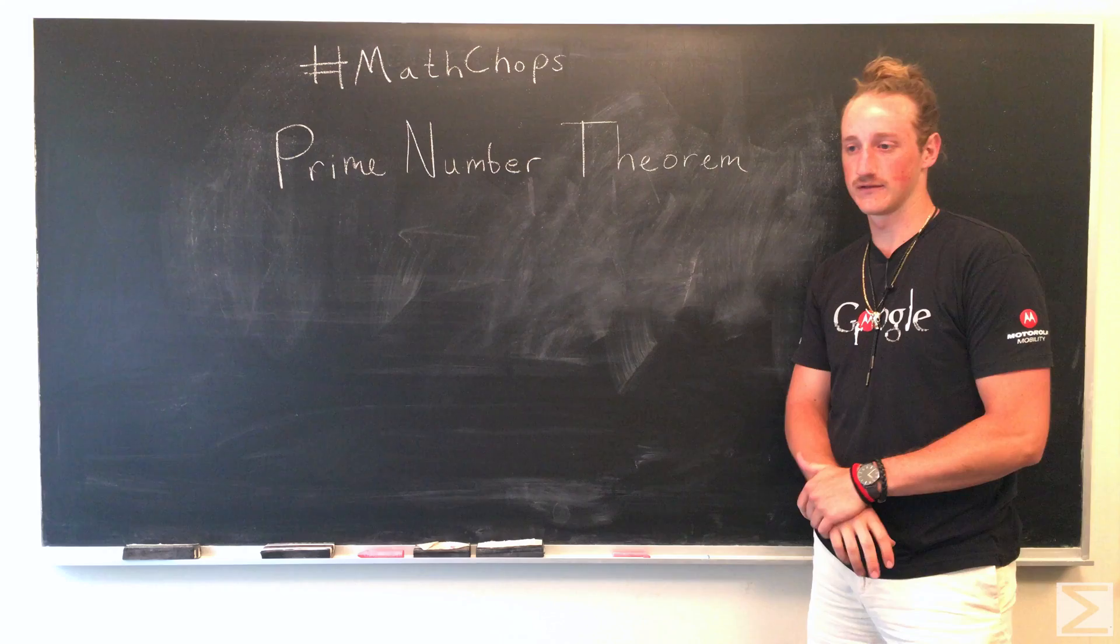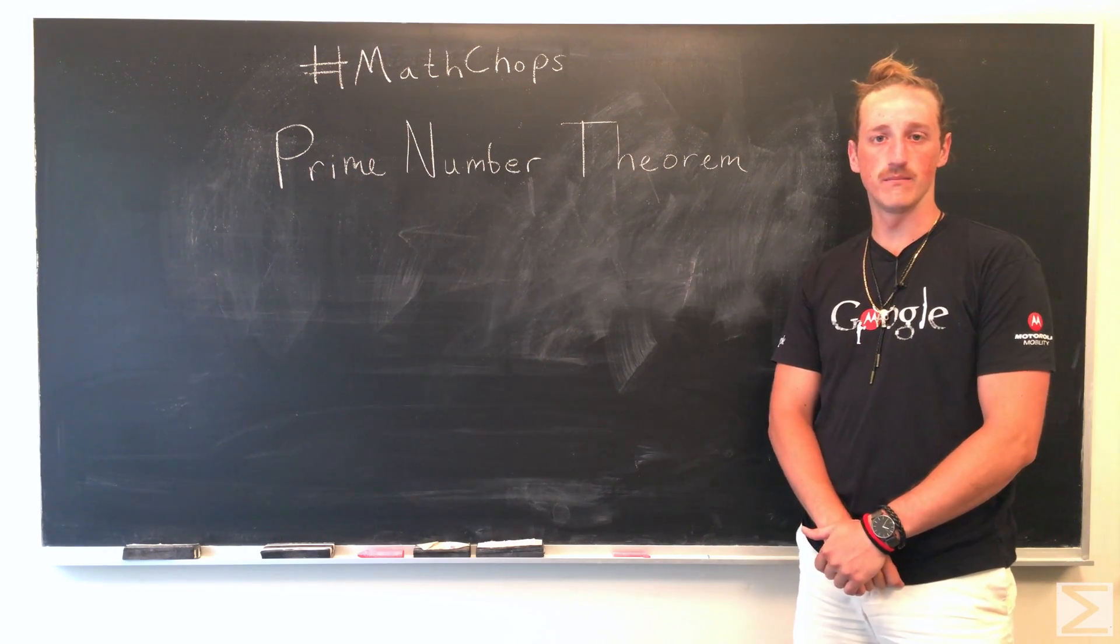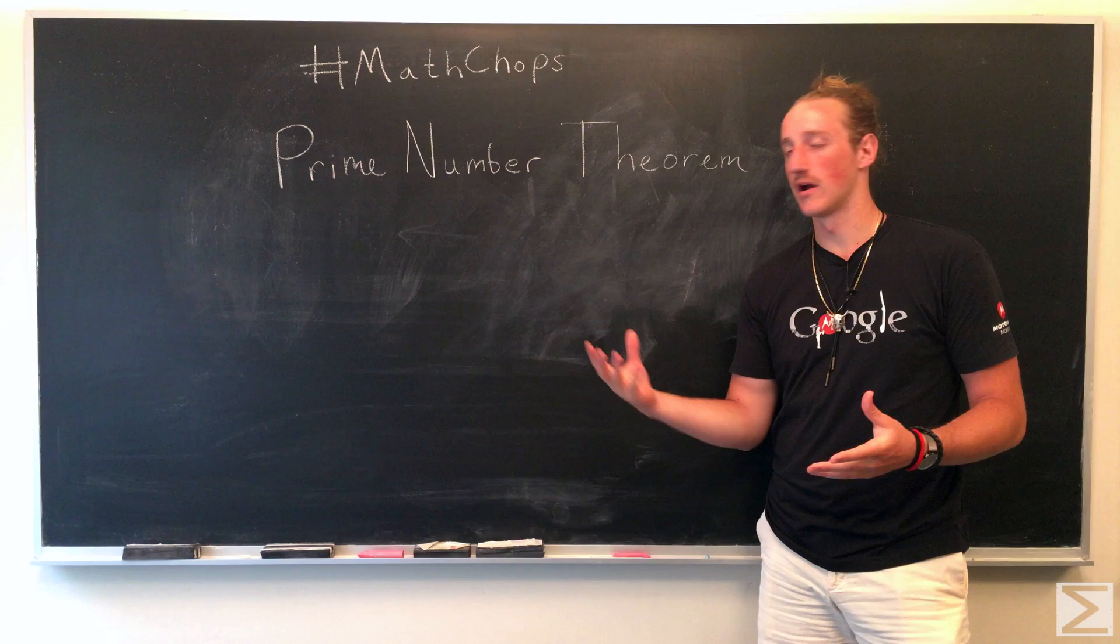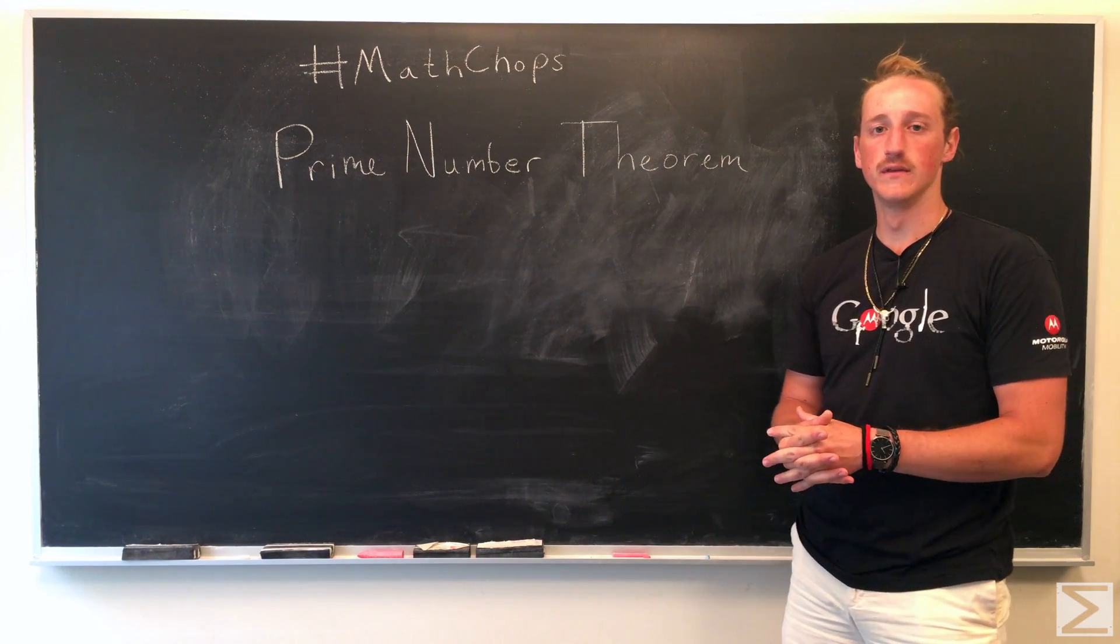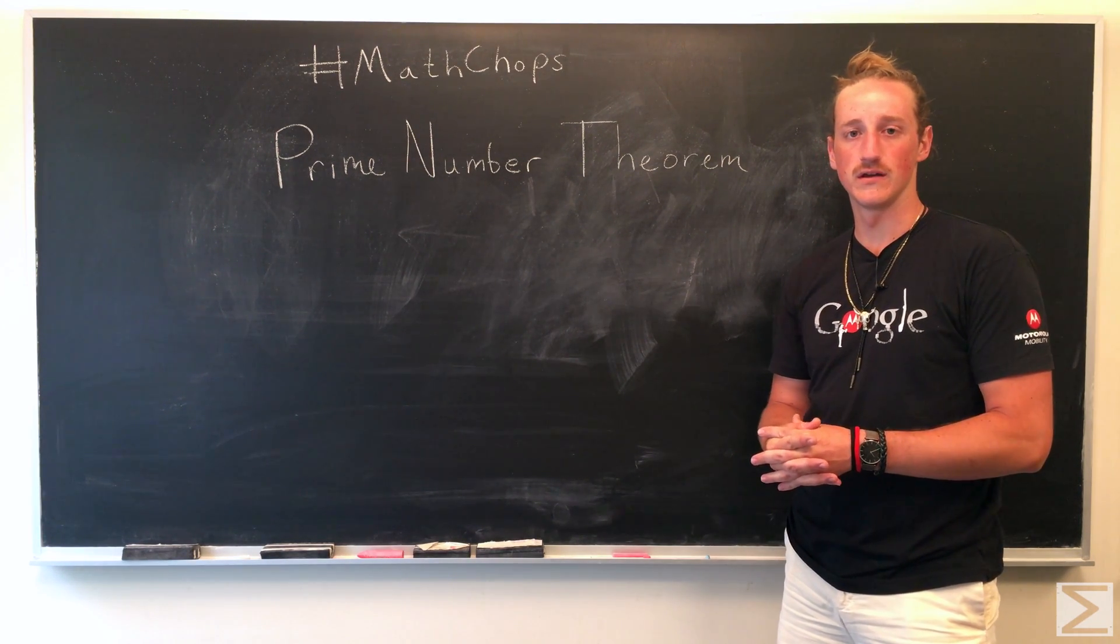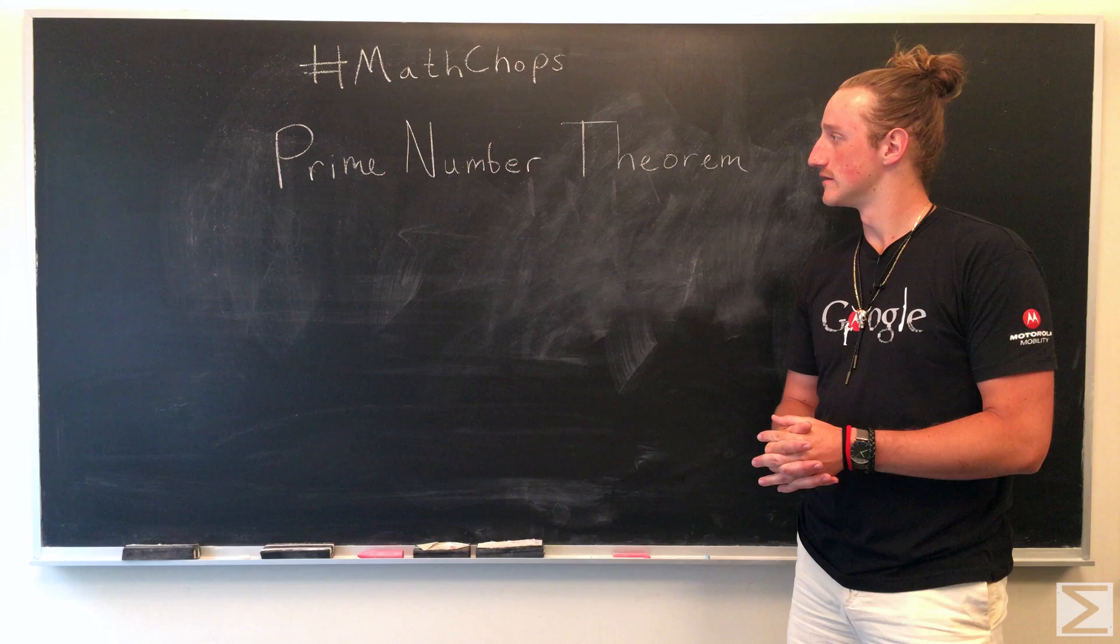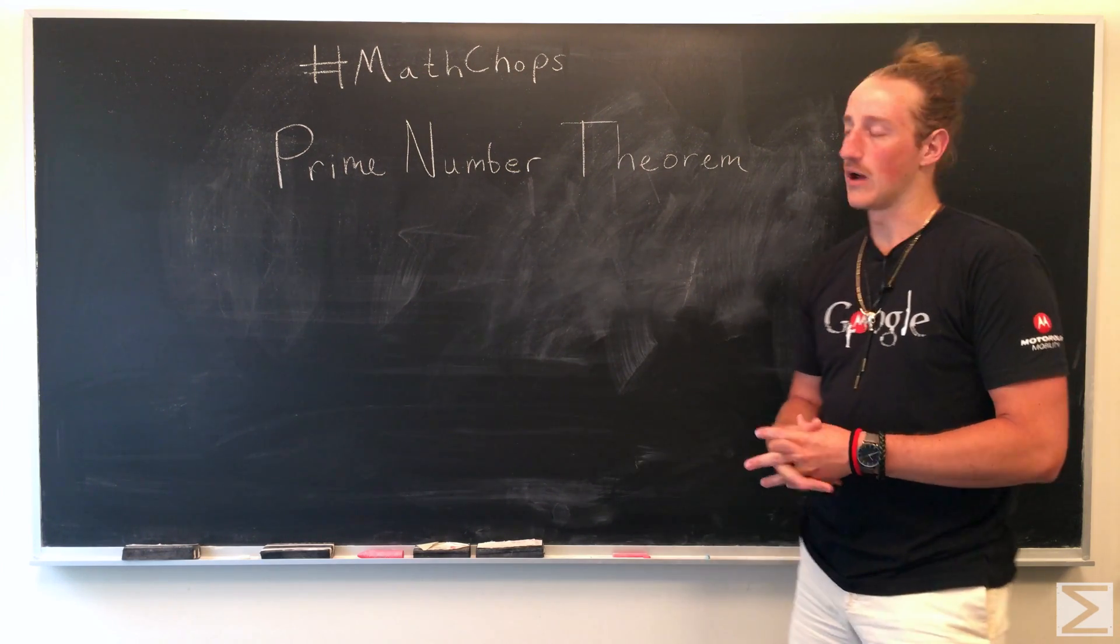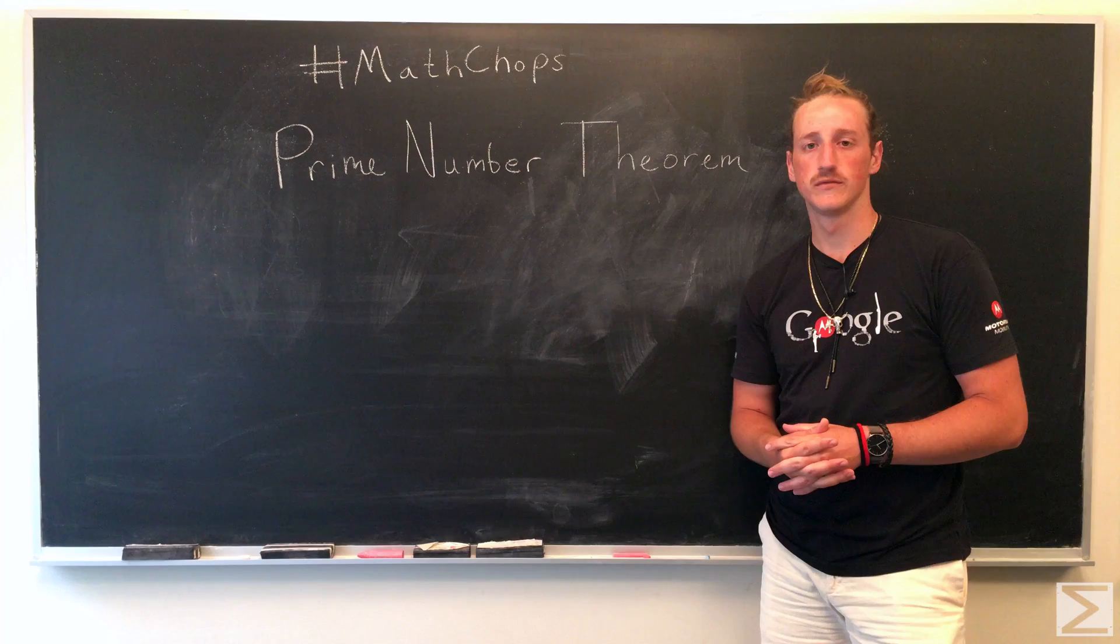The proof is rather extensive, so we're just going to be talking about the basics. The prime number theorem is the approximation of the amount of prime numbers less than a number n. Today we're just going to talk about how it's calculated and some stuff about it.